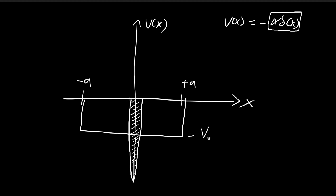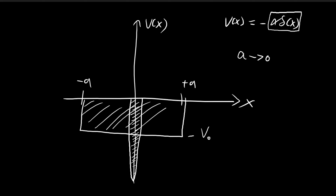To treat the Dirac delta potential as a limiting case of the finite square well, we're going to let A tend towards 0. While the finite square well gets more and more narrow, we're going to let V0 become larger and larger — deeper and deeper — in a way such that this whole area remains equal to alpha. When A tends towards 0 with this constraint, we essentially get the Dirac delta potential.